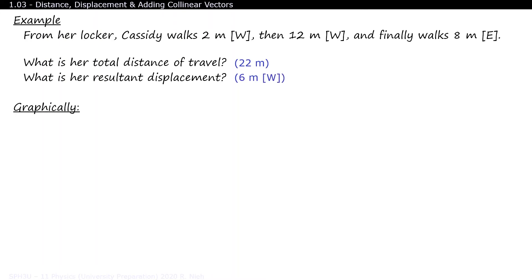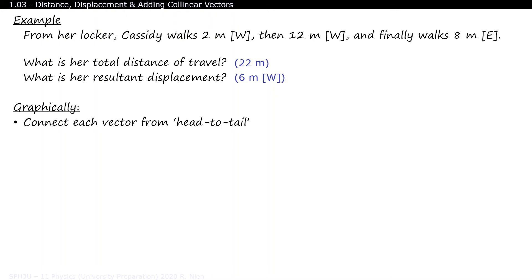Let's solve this problem graphically. The rule for solving the addition of vectors together is to connect them from head to tail. The big vector, in this case the resultant vector, can be determined by measuring the length from the tail of the first vector to the head of the last vector drawn.